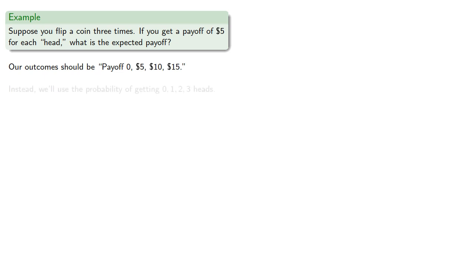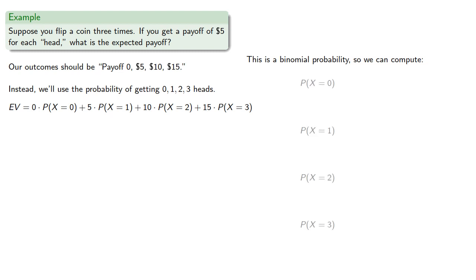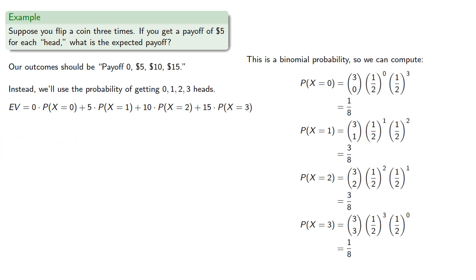Instead, we'll use the probability of getting 0, 1, 2, or 3 heads, and the payoff amounts. So our expected value will be 0 times the probability we get 0 heads, plus 5 times the probability we get 1, plus 10 times the probability we get 2 heads, plus 15 times the probability we get 3 heads. And these are all binomial probabilities. So we can compute and find our expected value.